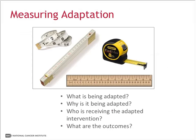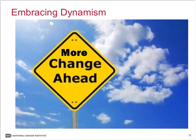Key to all of this is that we need to measure not only the core intervention through fidelity measures, but also the different ways in which interventions might be adapted. Following Wiltsey-Sturman's framework, focusing on how well we measure what's being adapted gives us more insights. We benefit from understanding why something is being adapted, who is receiving the adapted intervention, and what outcomes we need to capture in order to understand the impact of those adaptations.